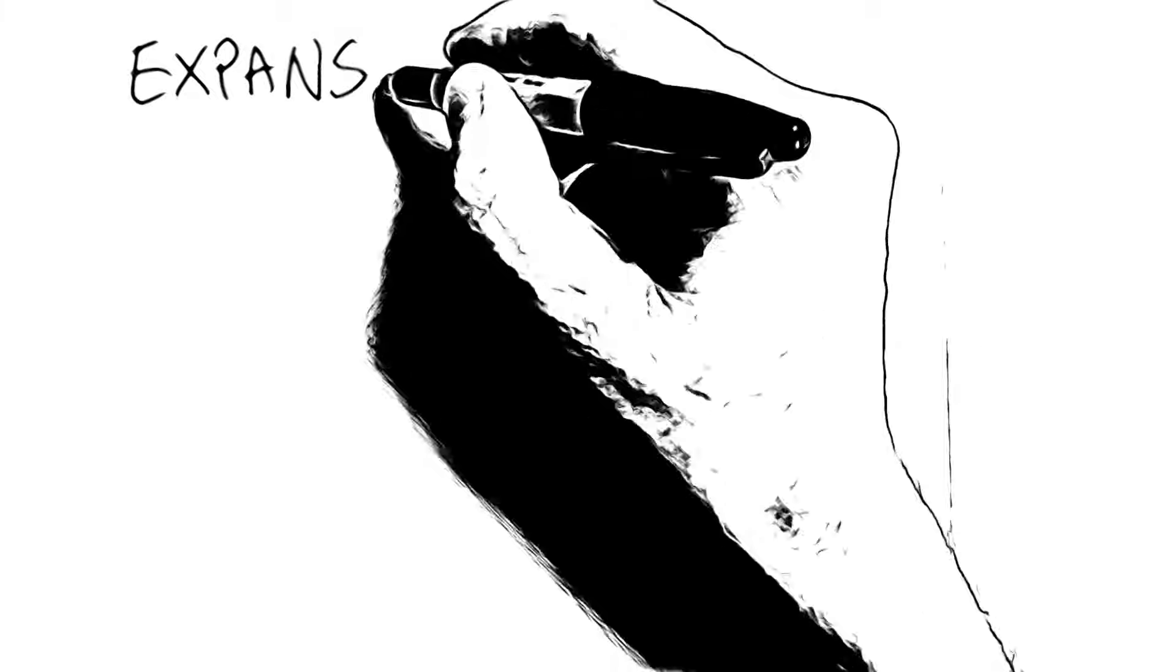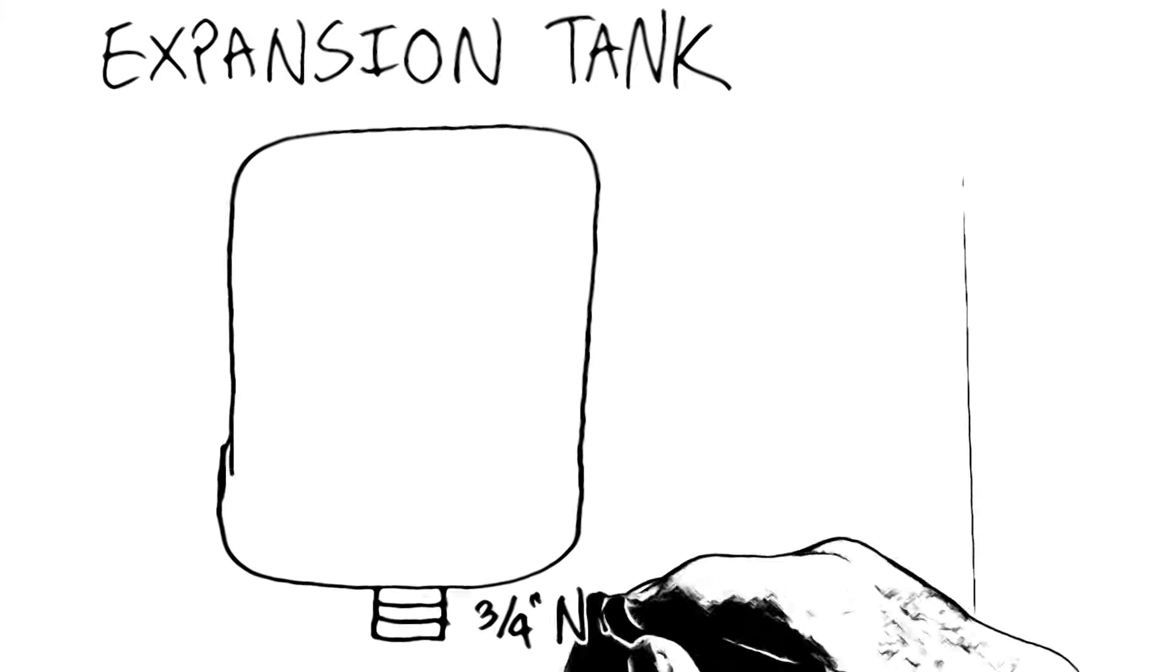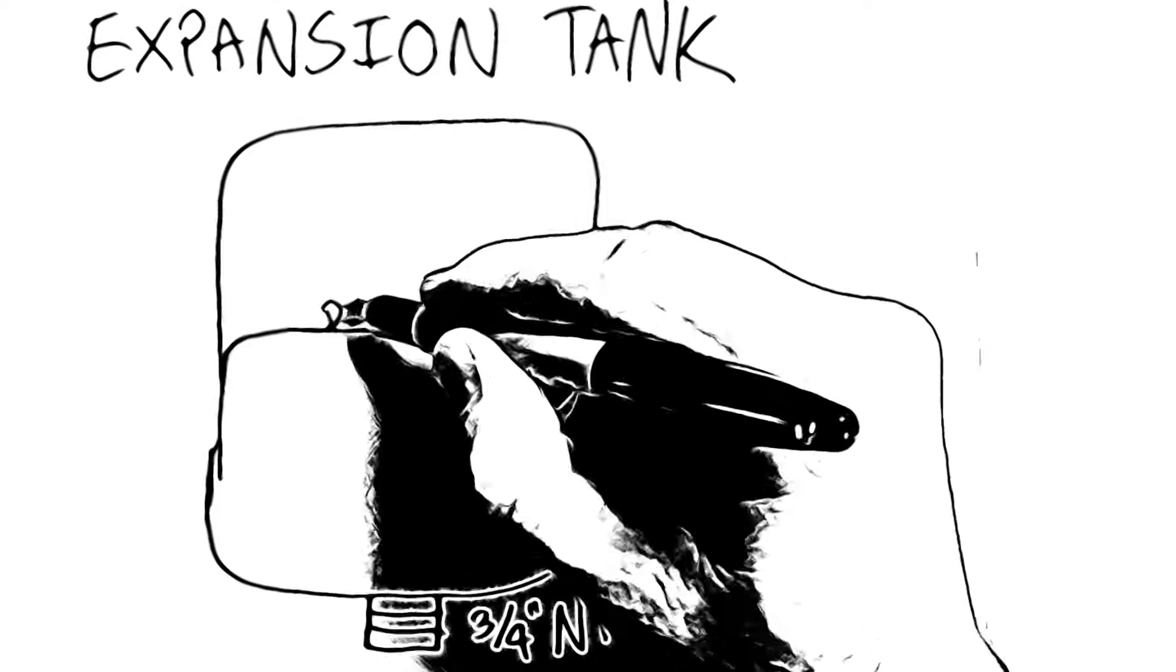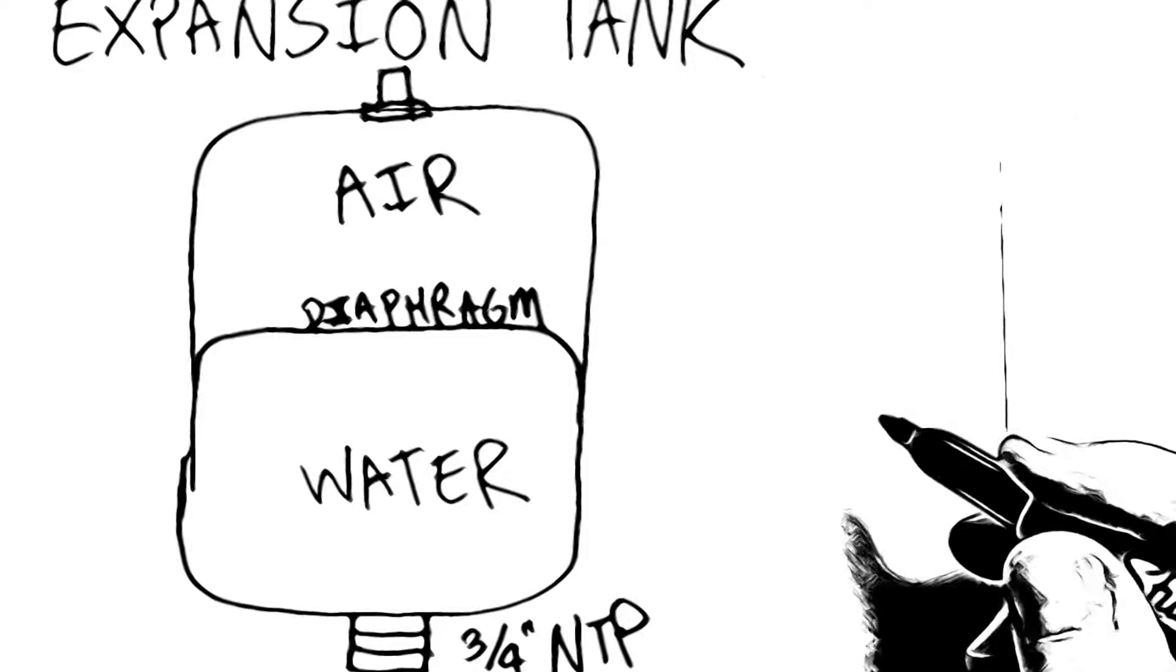Hey, quick explanation of expansion tanks. An expansion tank has two chambers inside of it, separated by a diaphragm in between. On one side of the diaphragm is water, on the other side is air.